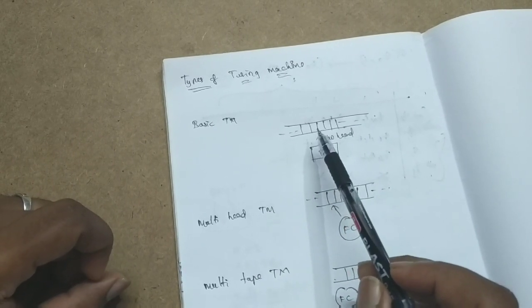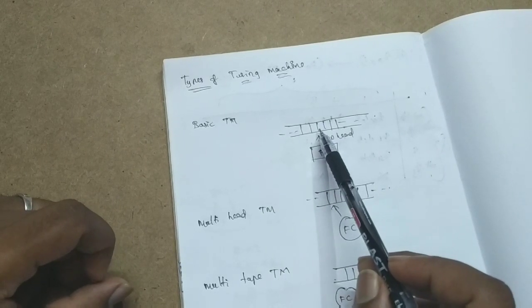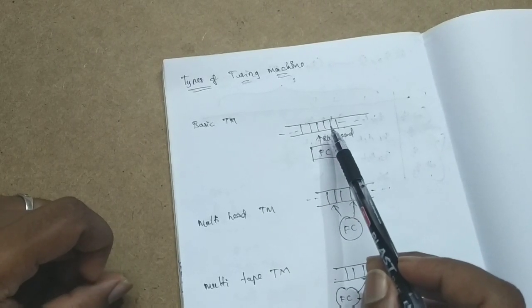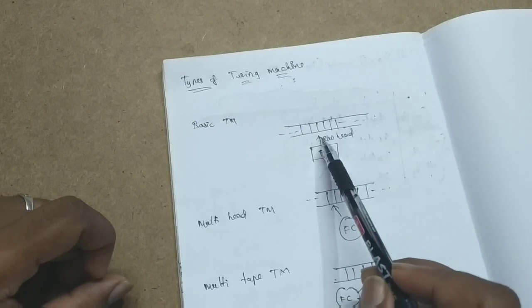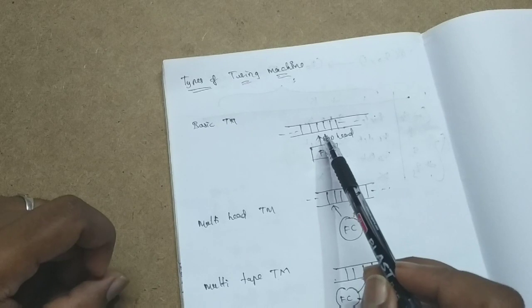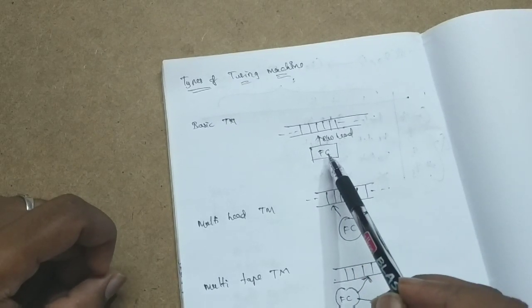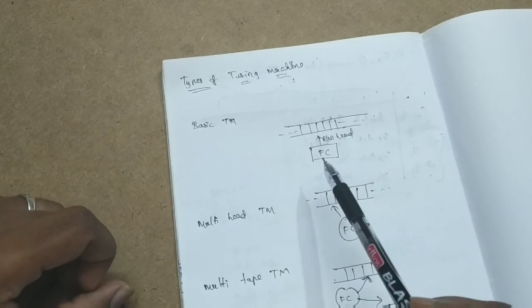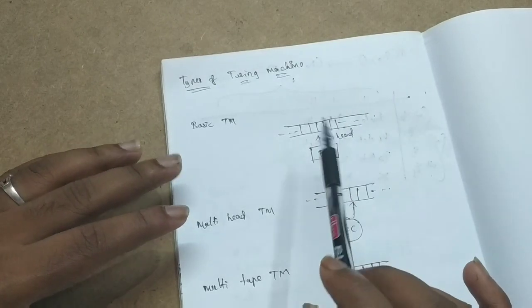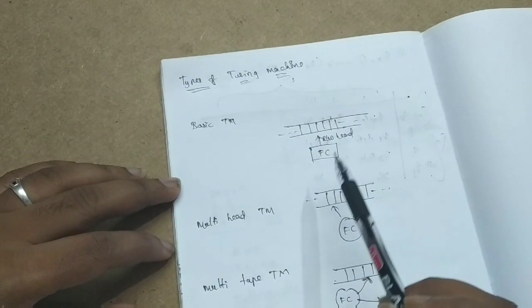You will be having one infinite tape which is extended to infinity on both the sides and you will be having a read-write head which can move either left or right at a state and you will be having some finite control. It is nothing but like finite automata. This is the basic Turing machine.